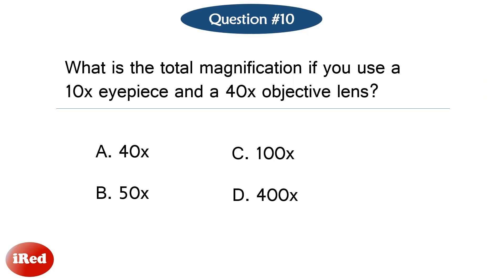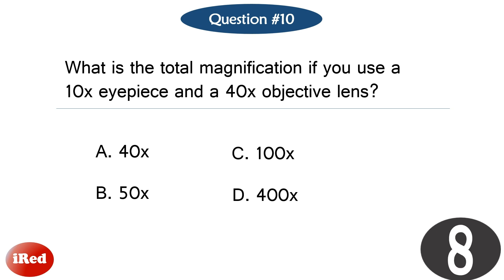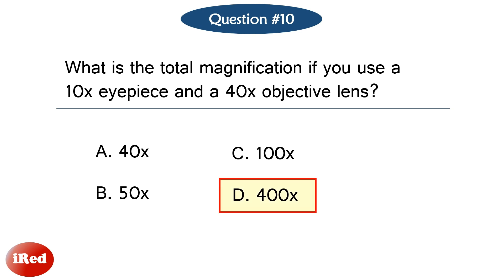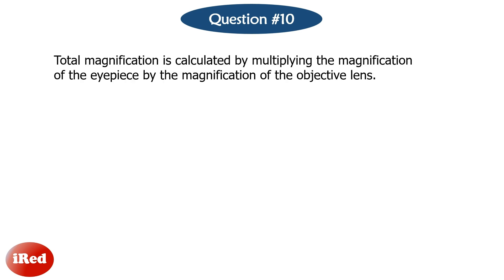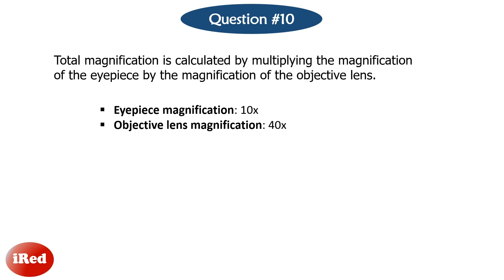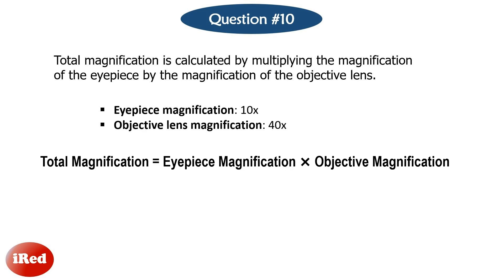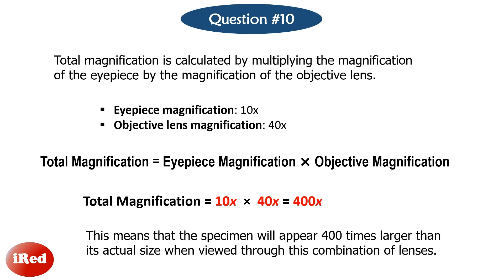Question number 10: What is the total magnification if you use a 10x eyepiece and a 40x objective lens? The correct answer is letter D, 400 times. Total magnification is calculated by multiplying the magnification of the eyepiece by the magnification of the objective lens. Eyepiece magnification: 10 times. Objective lens magnification: 40 times. Total magnification equals eyepiece magnification times objective magnification: 10 × 40 = 400 times. This means the specimen will appear 400 times larger than its actual size when viewed through this combination of lenses.